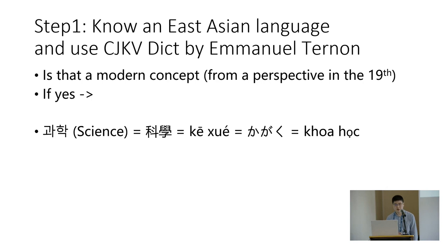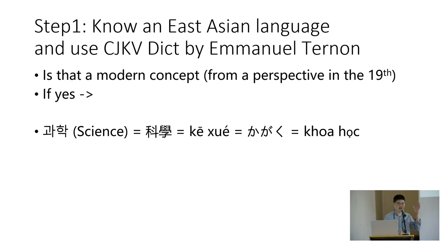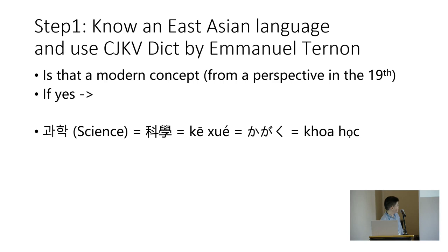So how can you harness this history if you know an East Asian language? First, you still have to know at least one East Asian language to have a repertoire of vocabulary. Then you have to think: is this a modern concept? By 'modern,' I mean modern for people living in early 19th century China or Japan — so almost everything is modern. You can use the CJKV dictionary by Emmanuel Tionon, which combines different East Asian languages, and find that a character is pronounced, for example, 'kēxué' in Mandarin, and 'quahok' in Vietnamese.